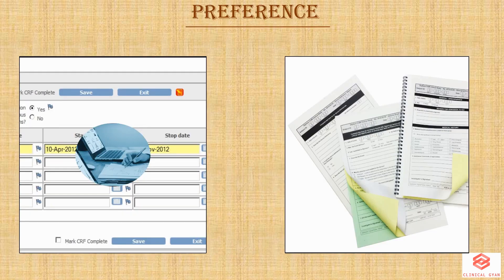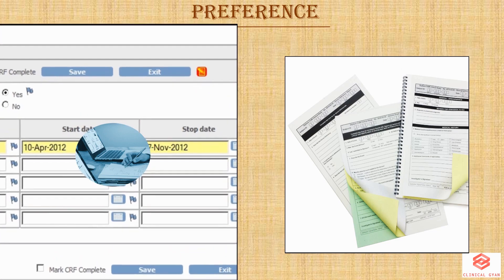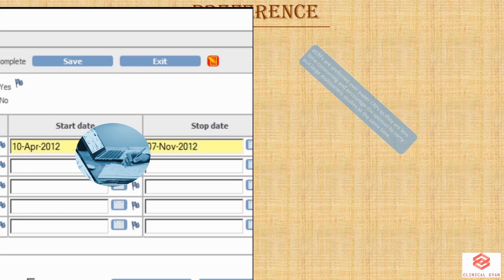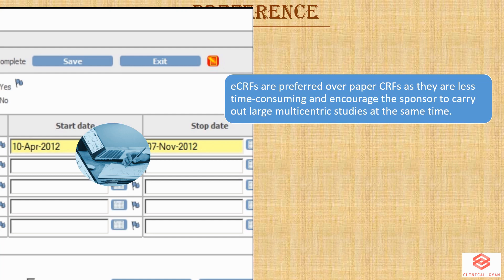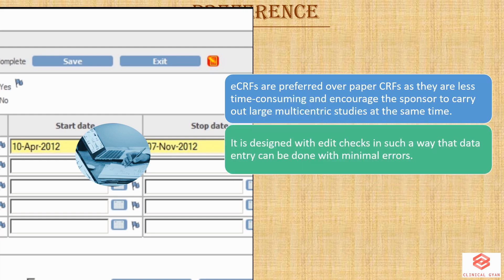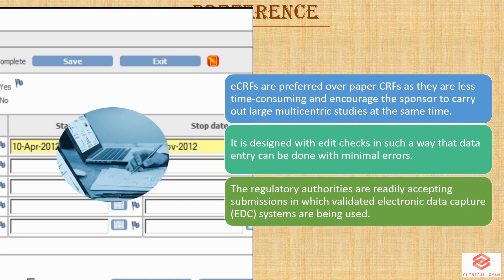eCRFs are preferred over paper CRF as they are less time-consuming and also encourage the sponsor to carry out large multicentric studies. At the same time, eCRFs are designed with edit checks in such a way that data entry can be done with minimal errors. Moreover, regulatory authorities are readily accepting submissions in which validated electronic data capture systems are being used.